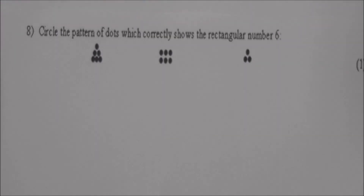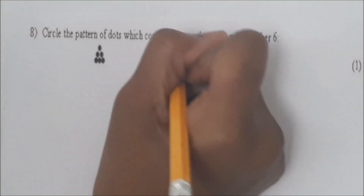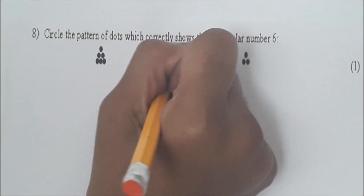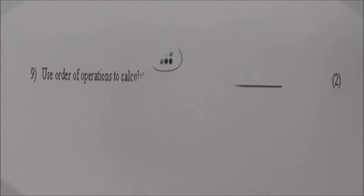Read number 8. Circle the pattern of dots which correctly shows the rectangular number 6. Circle the correct one. Very good. What would you call the other dot patterns? The triangular numbers. The triangular numbers. Very good.